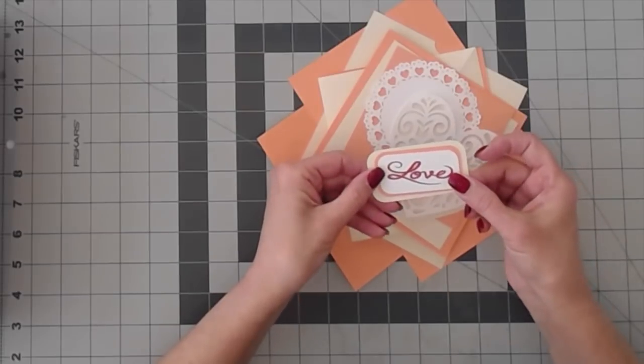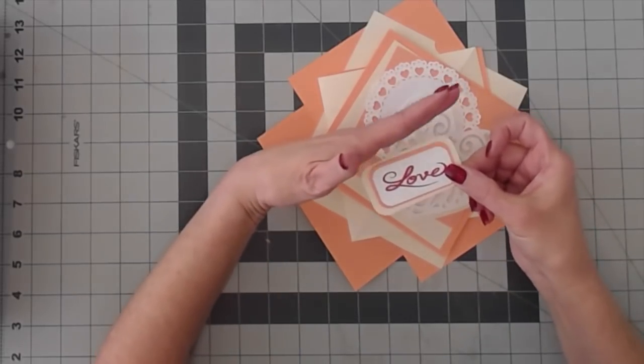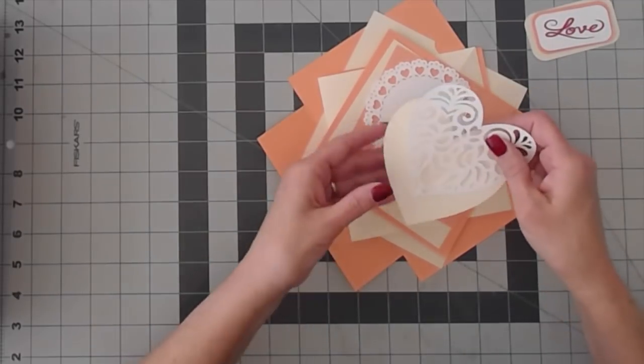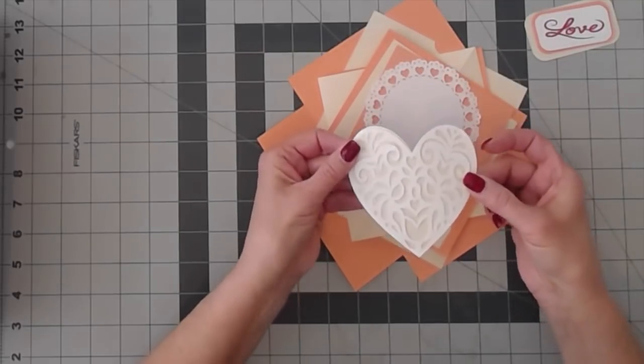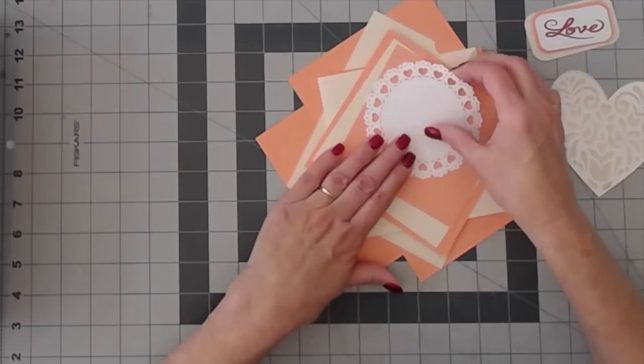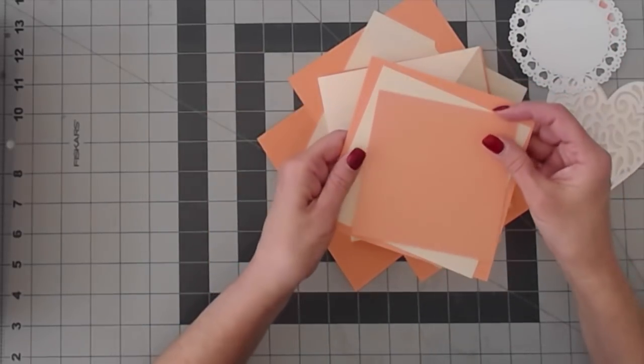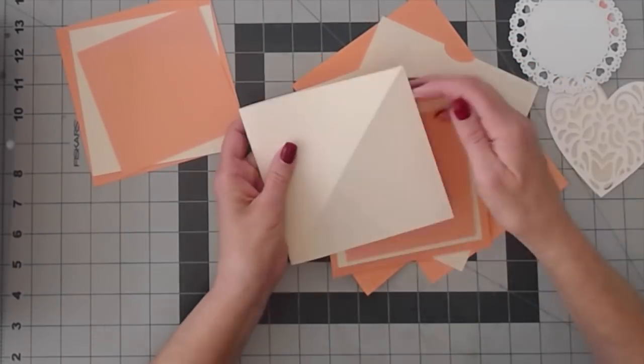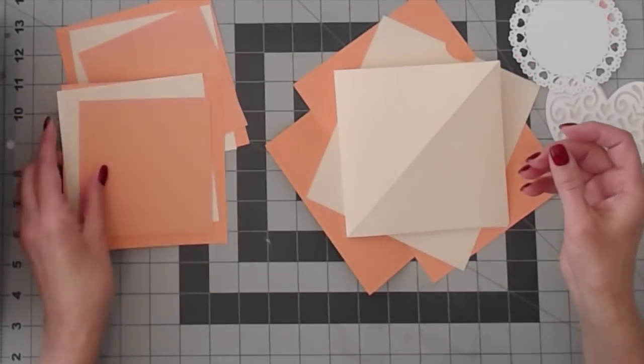You have your tag for the inside of the card that your outside will butt up against to stand up. You have a heart layer and a flourish heart layer to go on top. You have a doily cutout. You have three layers for the inside of the card and you have three layers for the outside of the card.